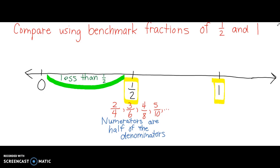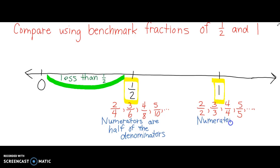Let's think about the benchmark fraction of one. I know that another name for one is two halves, three thirds — three pieces out of three is one whole — four pieces out of four, or four fourths, is a whole; five fifths is a whole, and so on. What I know about that is that in each one of these names for one, the numerators are equal to the denominators. That's what makes them a whole.